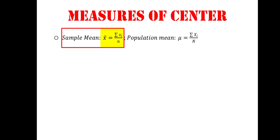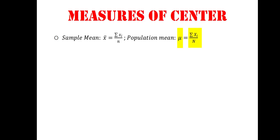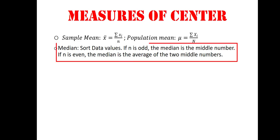over n, and the population mean mu, which is computed by summation of xi over capital N. We have the median, which is obtained first by sorting our data values.